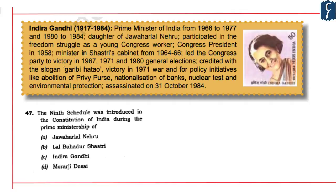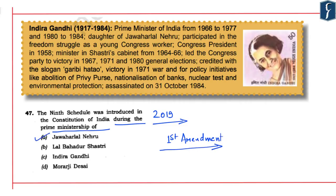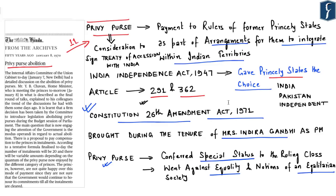The 2019 Prelims question asked: 'The Ninth Schedule was introduced in the Constitution of India during the Prime Ministership of whom?' The Ninth Schedule was added through the Constitution First Amendment Act during the Prime Ministership of Jawaharlal Nehru. Similar questions can be asked about privy purses and other initiatives during Mrs. Indira Gandhi's tenure as Prime Minister. She led the Congress party to victory in the 1967, 1971, and 1980 general elections and is credited with the slogan 'Garibi Hatao,' victory in the 1971 war, abolition of privy purse, nationalization of banks, nuclear test, and environmental protection. She was assassinated on 31st October 1984.